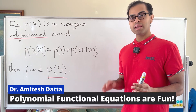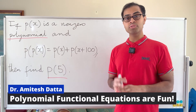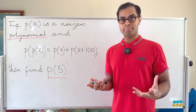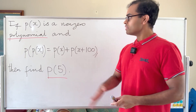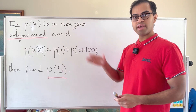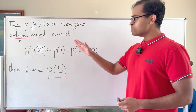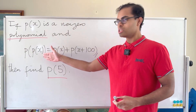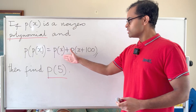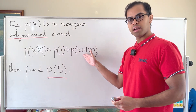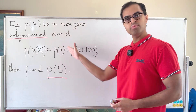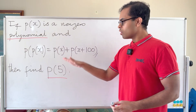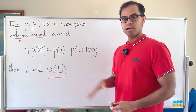Here's an elegant problem and I'm going to walk you through the thinking process as a professional mathematician. We have a non-zero polynomial p(x), and p(p(x)), the composition, is equal to p(x) plus p(x+100). We want to find p(5).